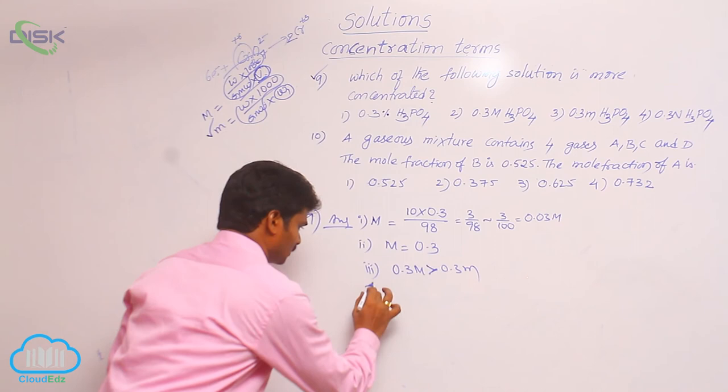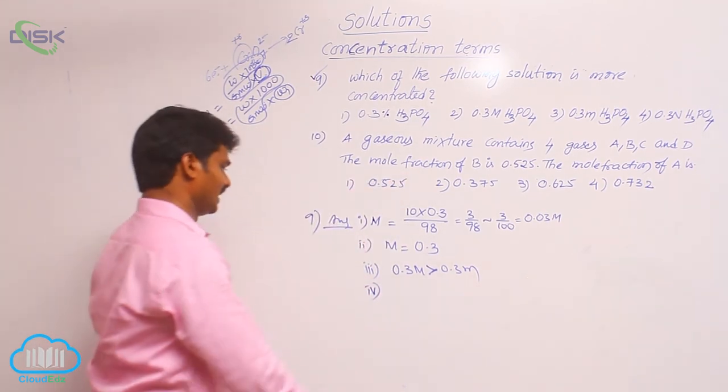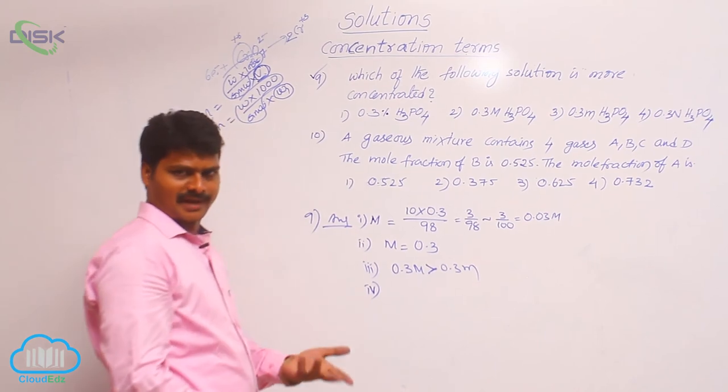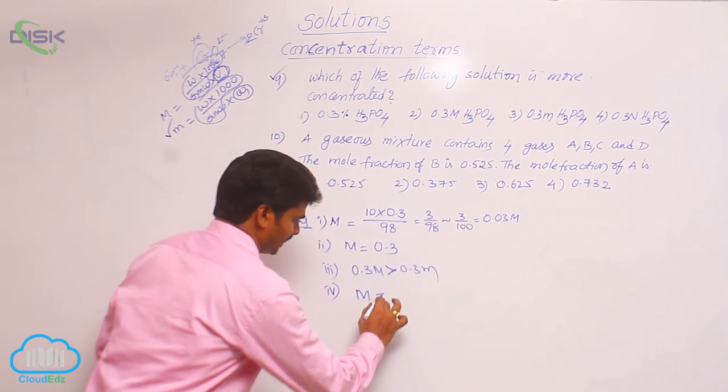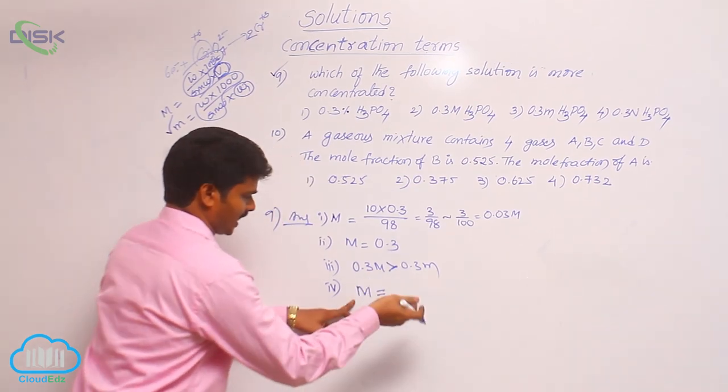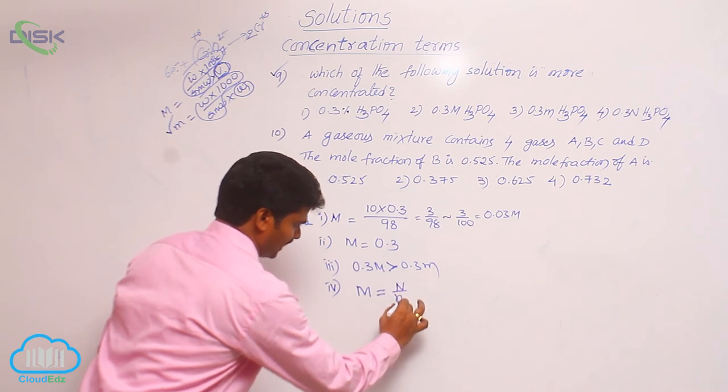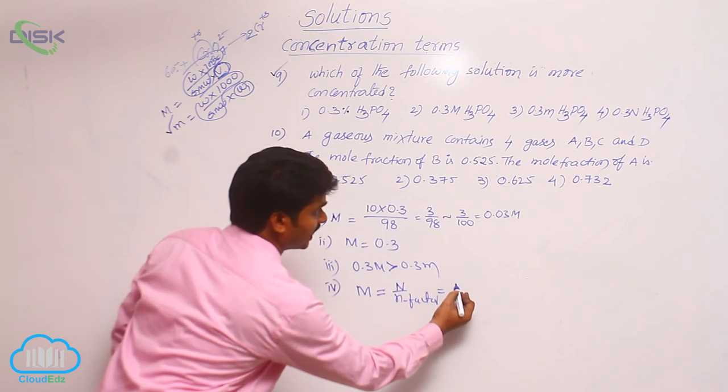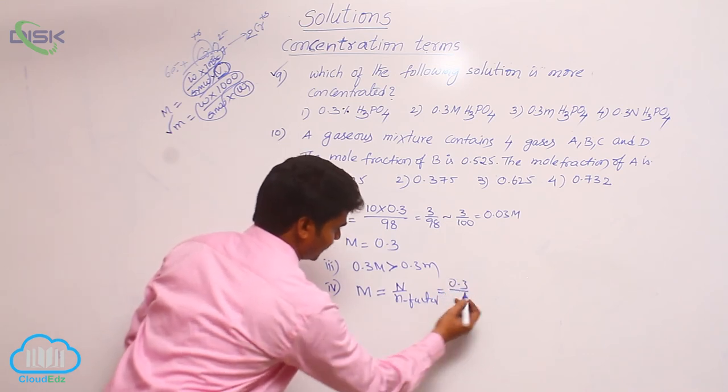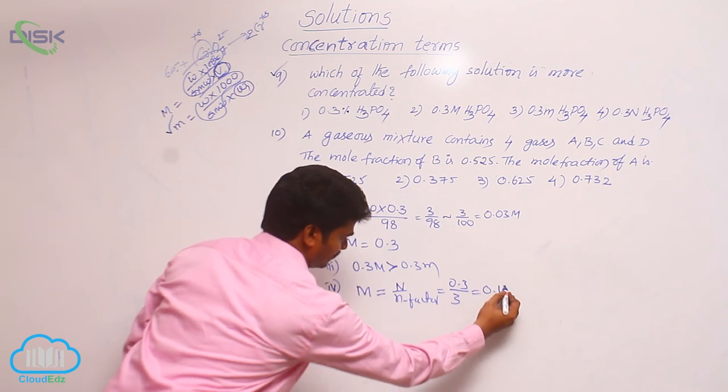Let us check the fourth option. There it is 0.3 normal. We have a relation between molarity and normality. Here normality is given. How to convert normality into molarity? Molarity equals normality by n-factor. So using this formula, normality is 0.3 divided by its n-factor which is 3, that means 0.1 molar.